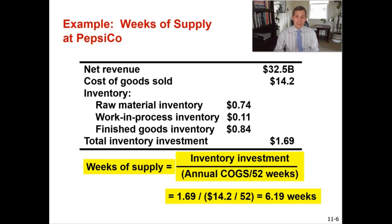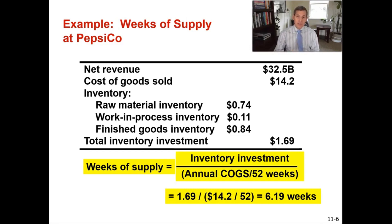In this video we have now learned to calculate three different supply chain metrics: weeks of supply, inventory turns, and assets committed to inventory.